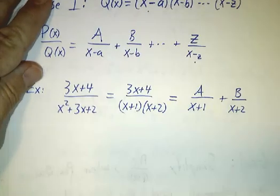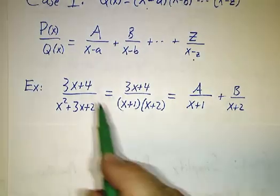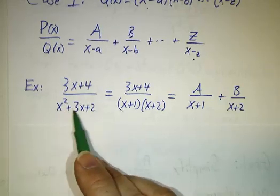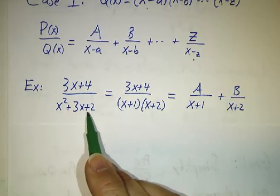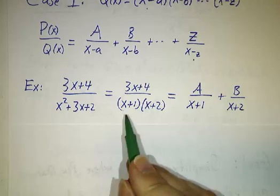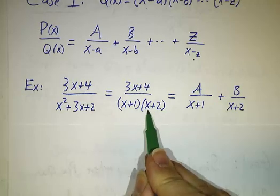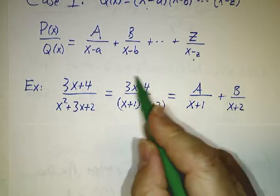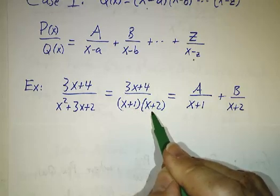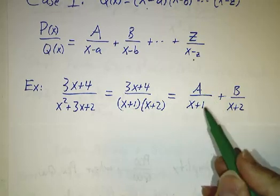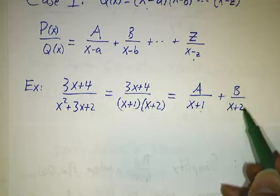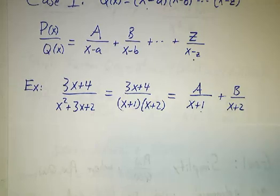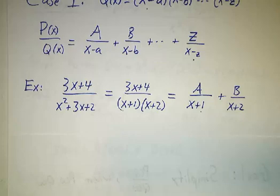So for example, we wanted to figure out what is 3x plus 4 over x squared plus 3x plus 2. So we factor the denominator, we write it as x plus 1 times x plus 2, and then we say that something divided by x plus 1 times x plus 2 must be a number divided by x plus 1 plus a number divided by x plus 2. The hard part is figuring out what are those numbers.